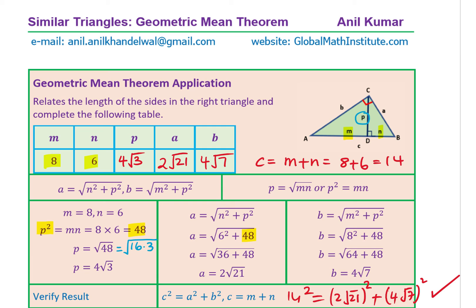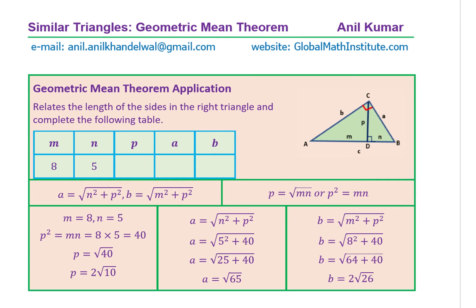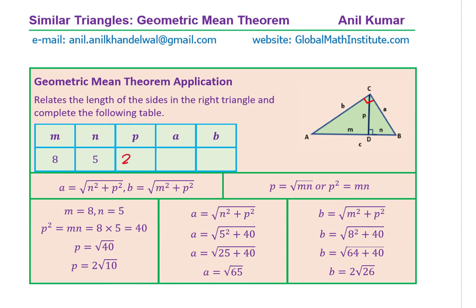Question two is very similar; the only difference is that N equals 5. I'd like you to do this question on your own. The answers to verify: P equals 2 square root 10, A equals the square root of 65, and B equals 2 square root 26. Please do it on your own and verify the result.